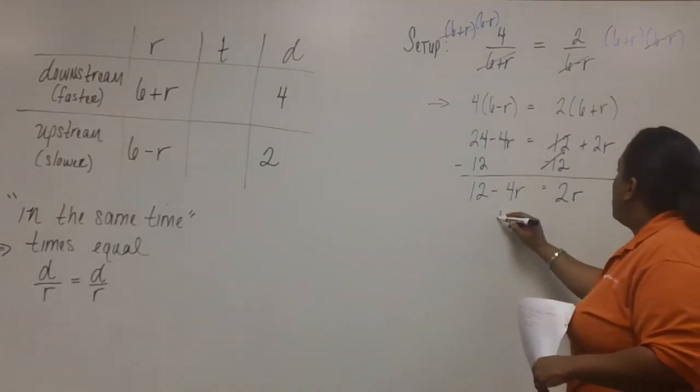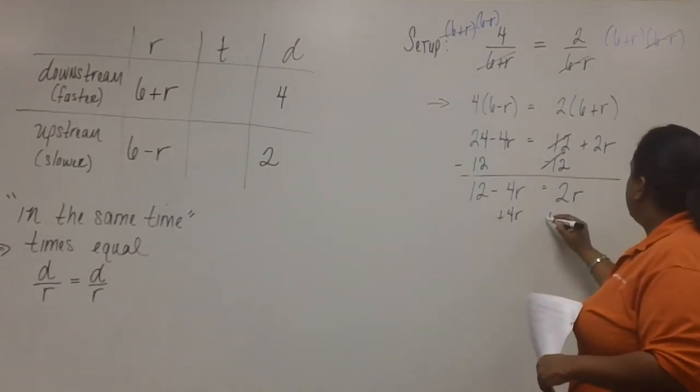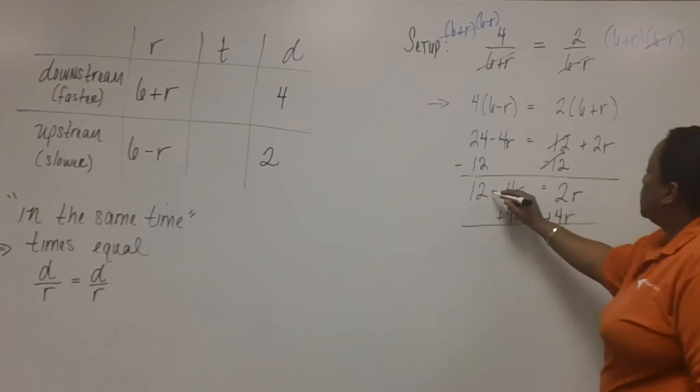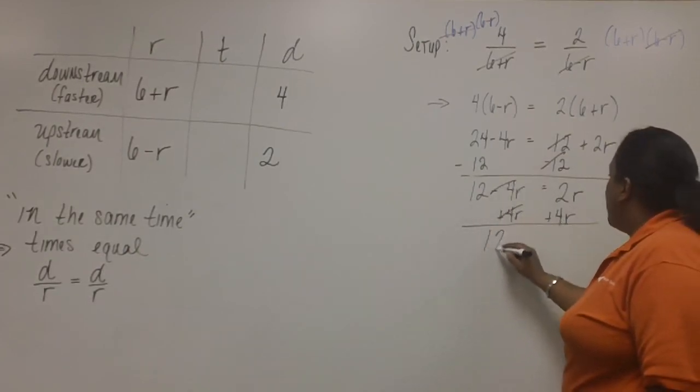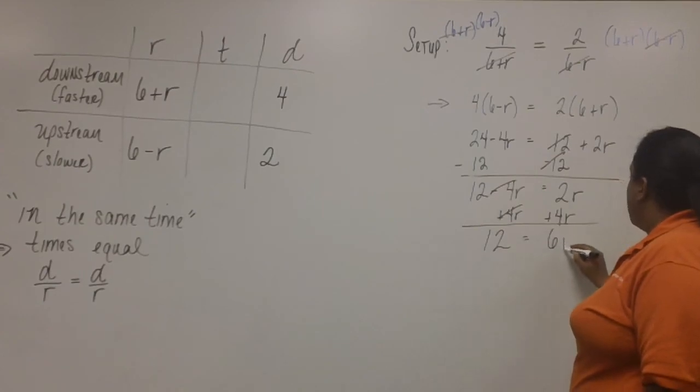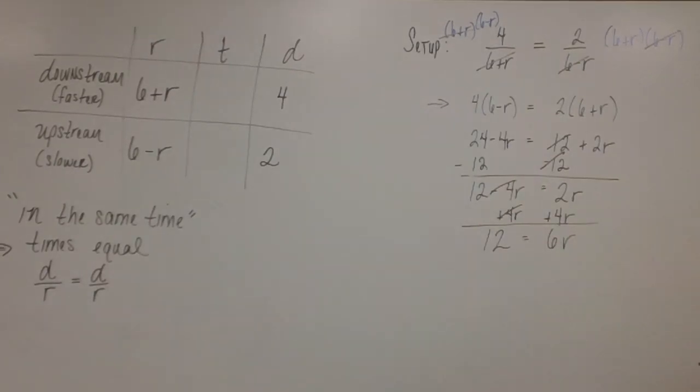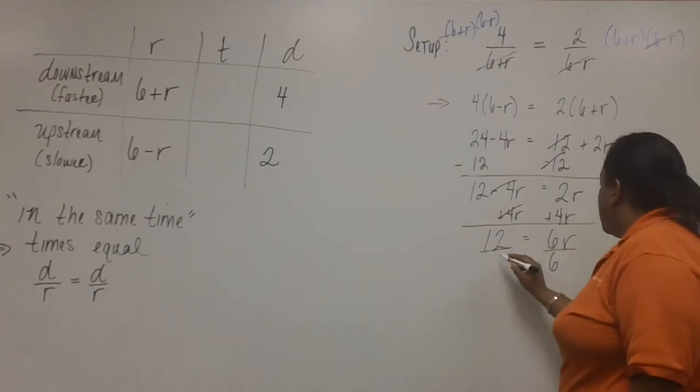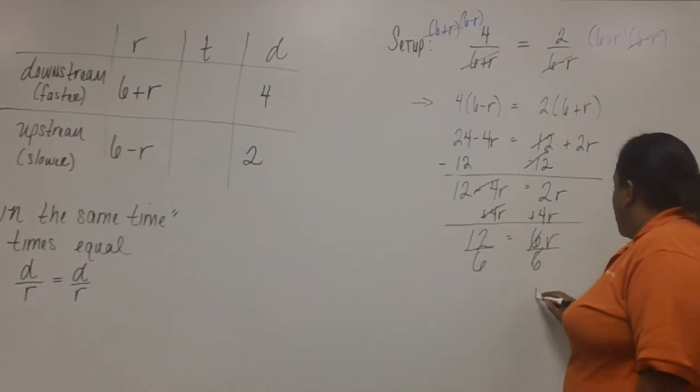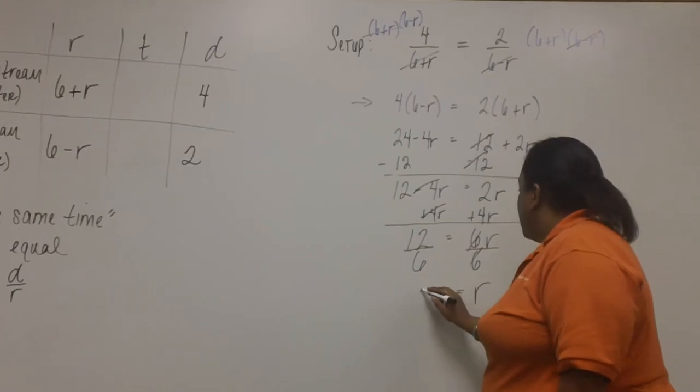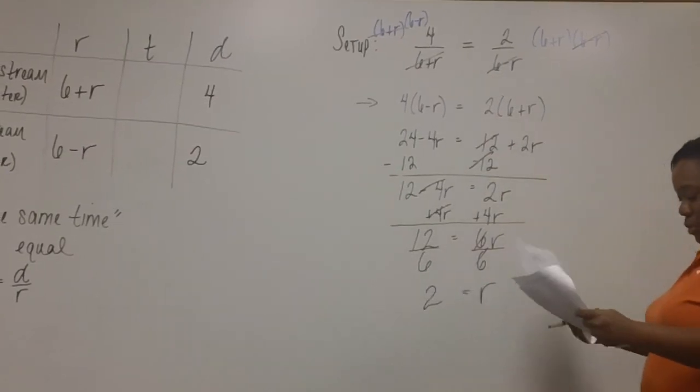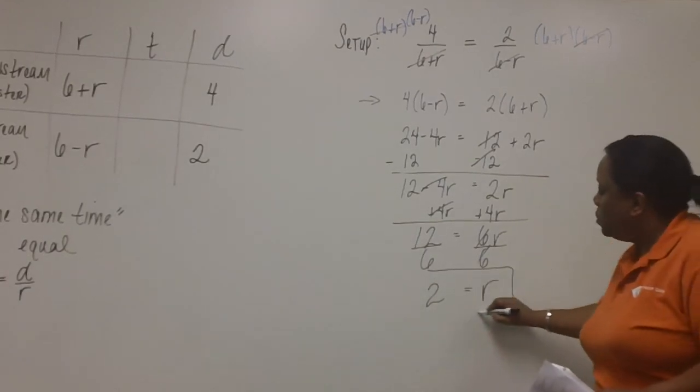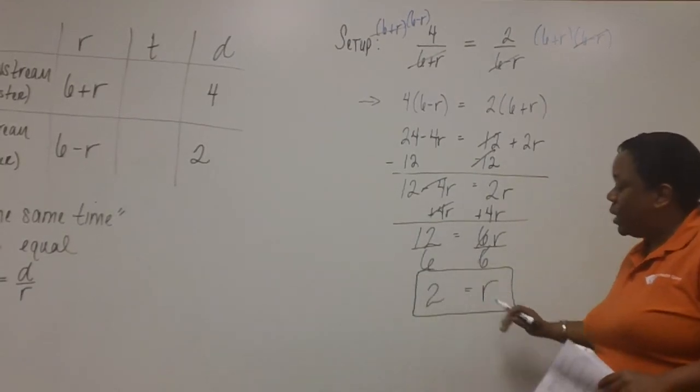Now, I'll add four R to both sides, and I'm left with twelve equals six R. Now, dividing both sides by six, we find that R is equal to two kilometers per hour. Now, this is your answer. This is the rate. Thank you.